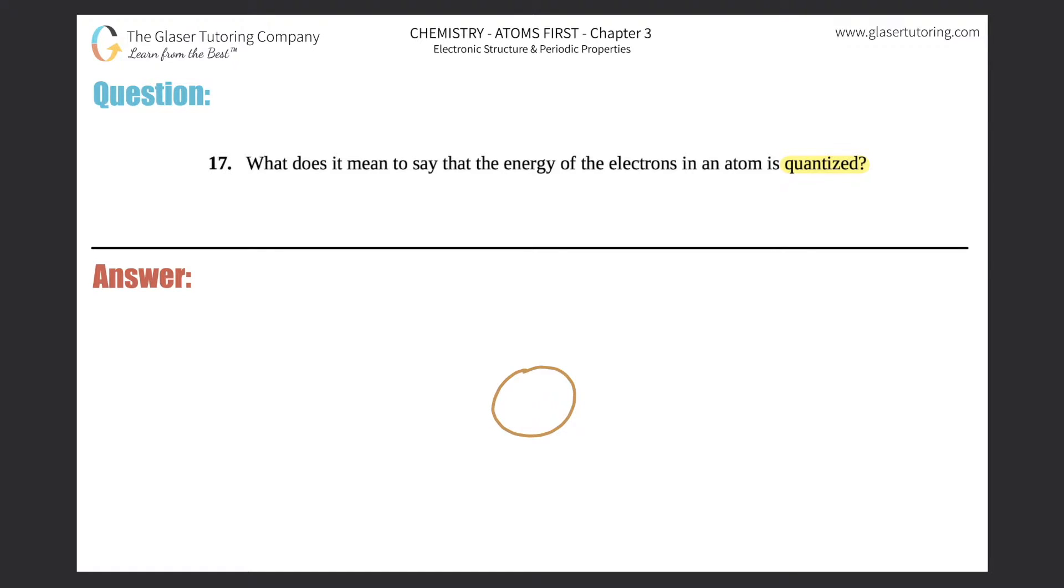What is included in the nucleus of an atom? There's basically three subatomic particles that you need to know: protons, neutrons, and electrons. But only two live in the nucleus. What two are they? They're the protons, which are positive, and the neutrons, which are neutral. So in the nucleus only resides protons and neutrons, and that's where the bulk of the mass of the atom is.